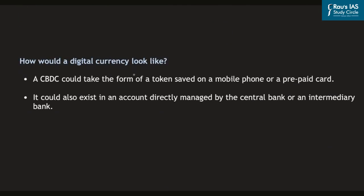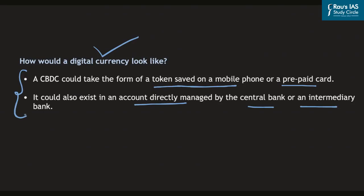How exactly would a digital currency look like? Simply, it could take the form of a token saved on a mobile phone or a prepaid card. It could also exist in an account that is directly managed by the central bank or an intermediary on behalf of the central bank. These are the few forms speculated for digital currency issued by central banks.